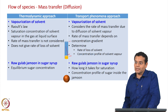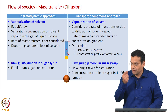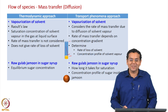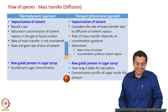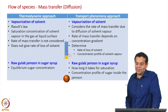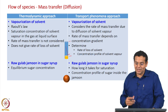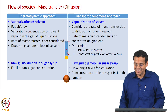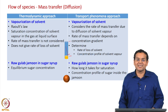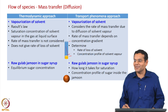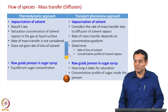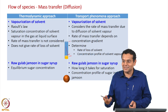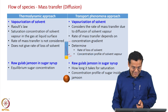A mouthwatering example: suppose you have raw gulab jamun and put it in sugar syrup — the equilibrium sugar concentration can be predicted from thermodynamics. But if you are eager to take the gulab jamun, transfer phenomena will tell you how long you have to wait. And if you are further interested, you can predict the concentration profile of sugar inside the gulab jamun. That is the scope of transfer phenomena in terms of rate and concentration profile.